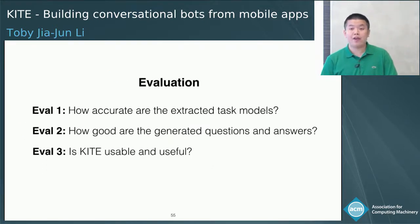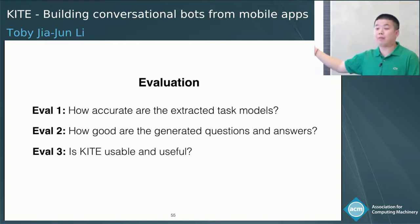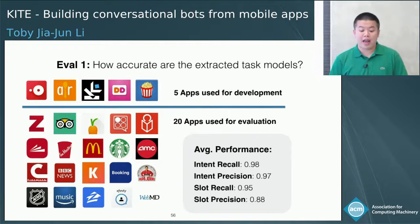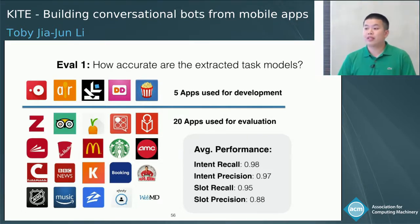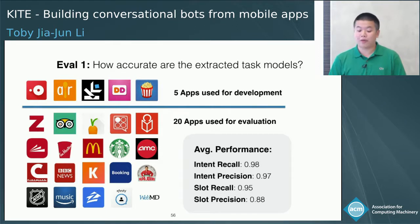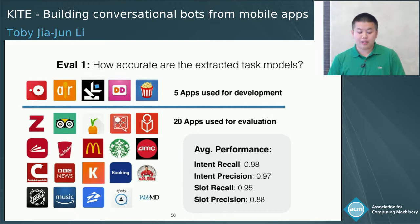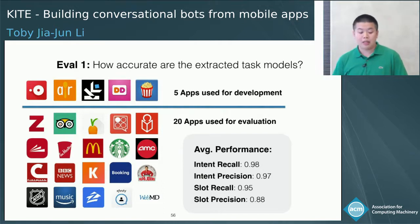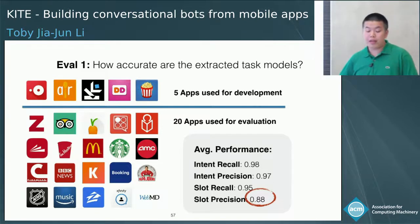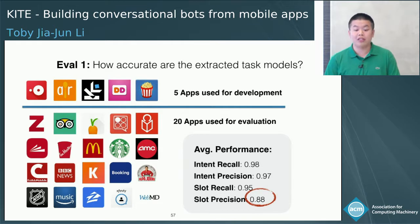We perform three separate evaluations for Kite, each focused on a different aspect of the system. We first evaluated the accuracy of our extracted task models. We selected 25 popular apps from 12 test domains. Five were used as a development set to tune the parameters used in Kite, and the remaining 20 were used for evaluation where we ran Kite without any modification. We calculated the precision and recall for the intents and slots generated in the task models. Kite can generate pretty accurate task models. There are some false positives in slots because Kite would sometimes incorrectly count UI transition events as slots, but this can be easily fixed by the developer in the web tool.